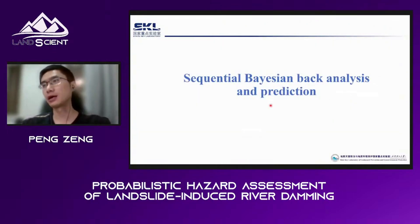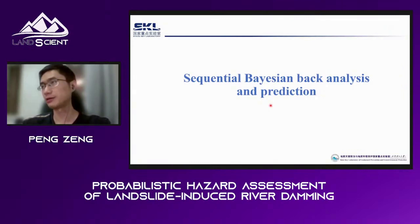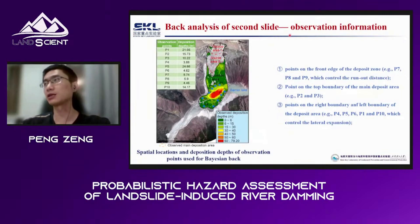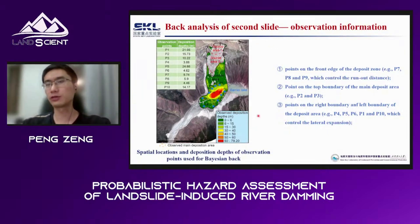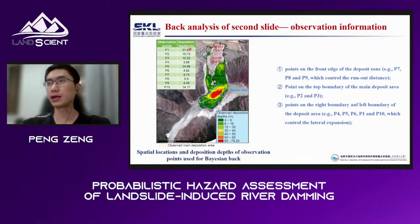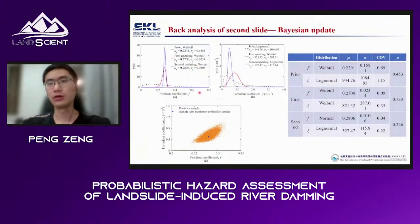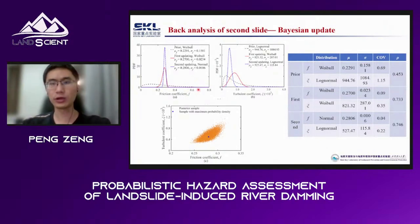We then conduct sequential Bayesian analysis to predict future landslide-induced river damming events. We use the second slide as observation, using 10 observation points and their deposition depths. Using the Bayesian method, the random variables are further updated and their standard deviations are further reduced. This improves our prediction confidence and provides reliable hazard assessment results.